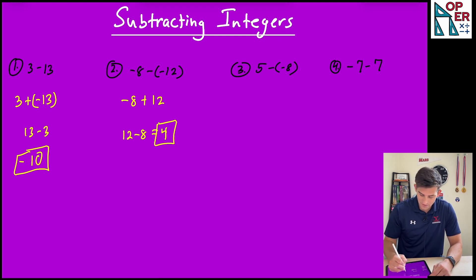Number three: 5 minus negative 8. We're going to rewrite this as 5 plus 8. This one is nice and easy - 5 plus 8, they're both positive. We can add them, keep the positive, and this would just be equal to 13.